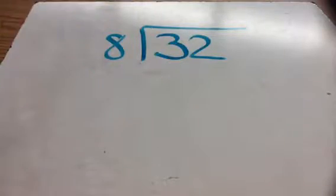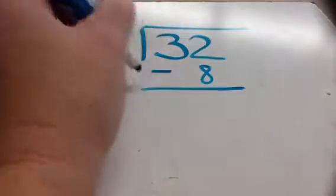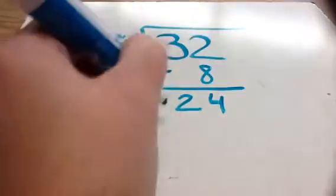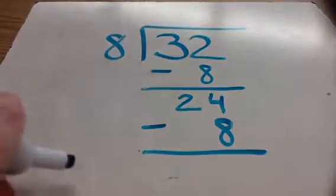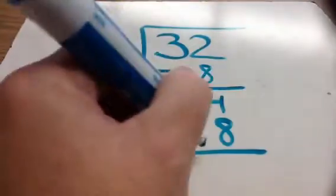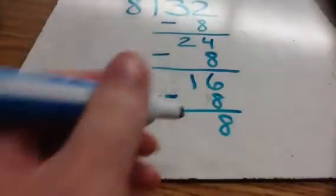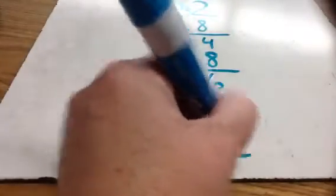So if I'm dividing 32 divided by 8, I'm just going to repeatedly subtract 8. 32 minus 8 is 24. Subtract 8 again, that's 16. Subtract 8 again, that's 8. And then subtract 8 one more time and I get 0.